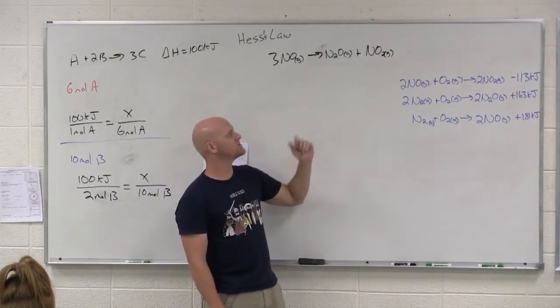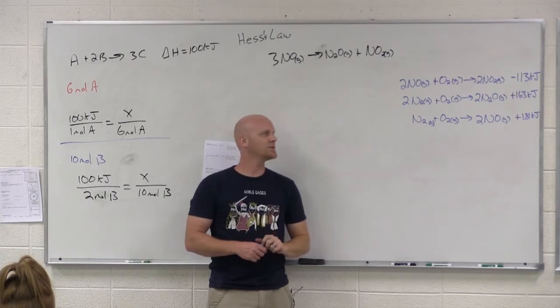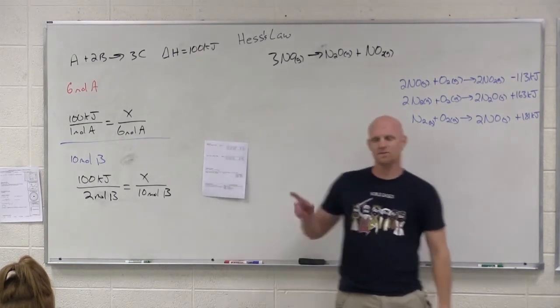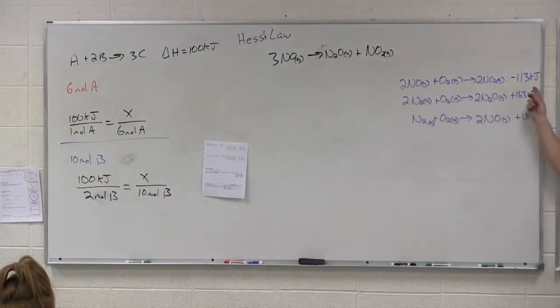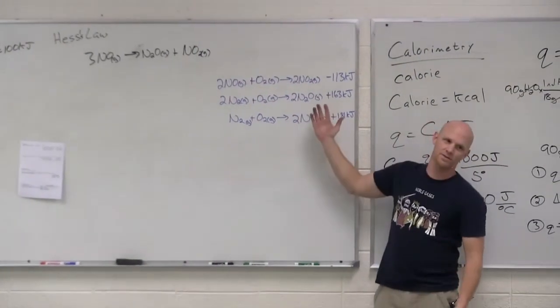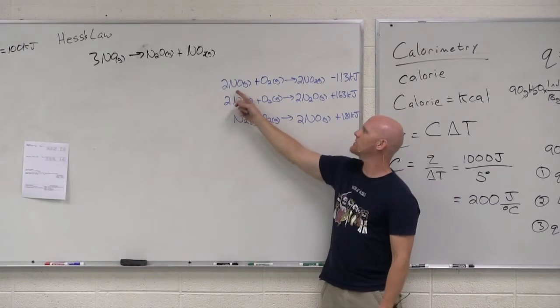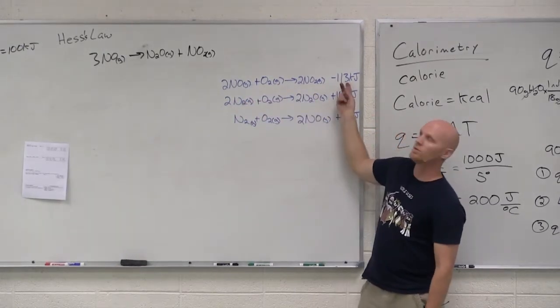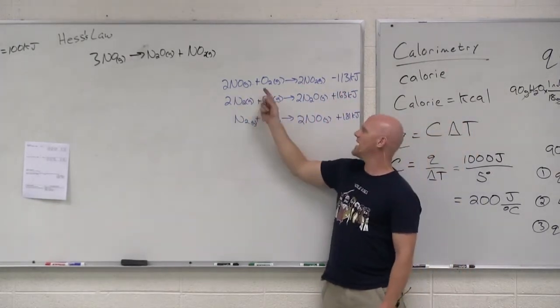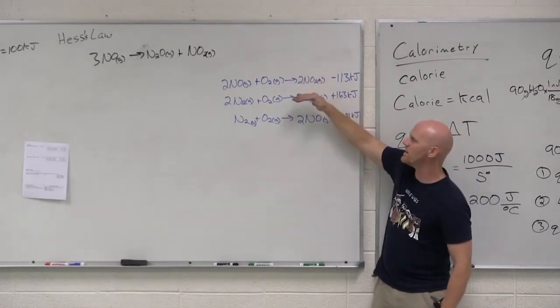Now, how many reactions have I supplied you with to be able to figure out this guy's delta H? I've given you an infinite number. Because I haven't just given you these 3 reactions. If this reaction's delta H is negative 113 kilojoules, what's the reverse reaction's delta H? Positive 113. So now how many have I given you? Well, it's not 6 either, because I'm not limited to just reversing this. What if I double all the coefficients? What happens to delta H then? Times 2. If you double all the coefficients, it doubles the value. So I can multiply any one of these reactions by any factor, and I can switch them around and change the sign. So really I have an infinite number of combinations here.